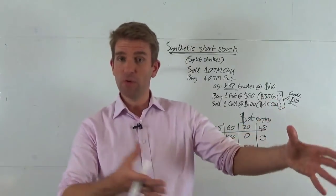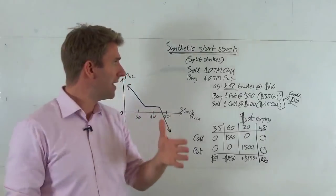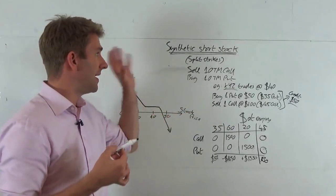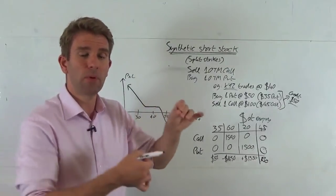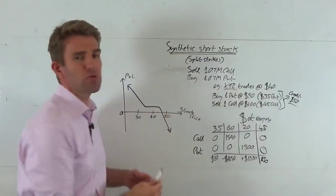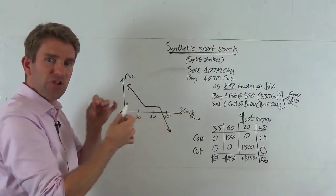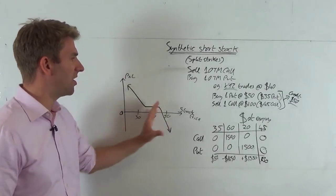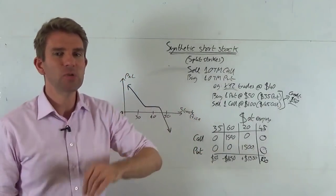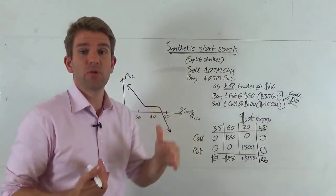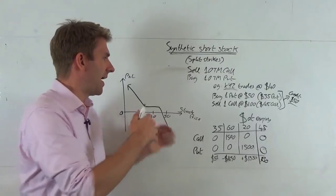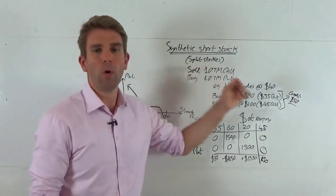So if you've seen the synthetic short stock position, we're selling the at-the-money call and buying the at-the-money put, giving us a very linear payoff — almost identical to being net short. However, using split strikes is a little less aggressive: we're selling out-of-the-money calls and puts either side of the current price. That changes the dynamics of the payoff diagram. We don't lose money if we're slightly wrong, and we don't make as much if we're slightly right — it dampens profit potential but limits losses slightly.